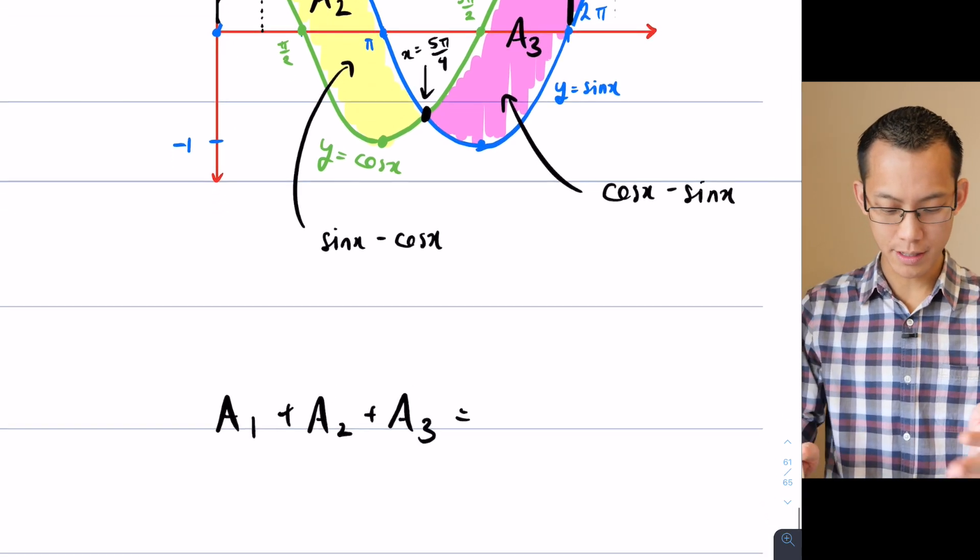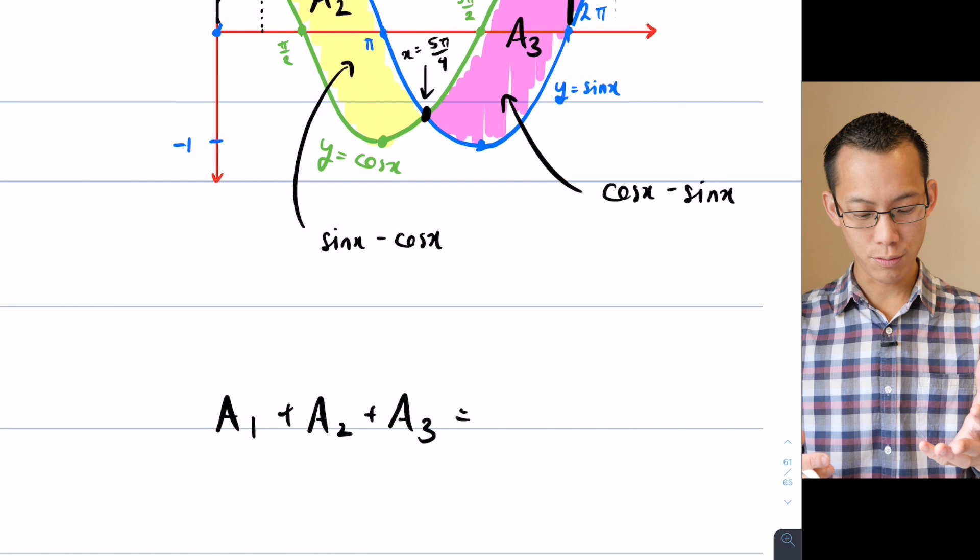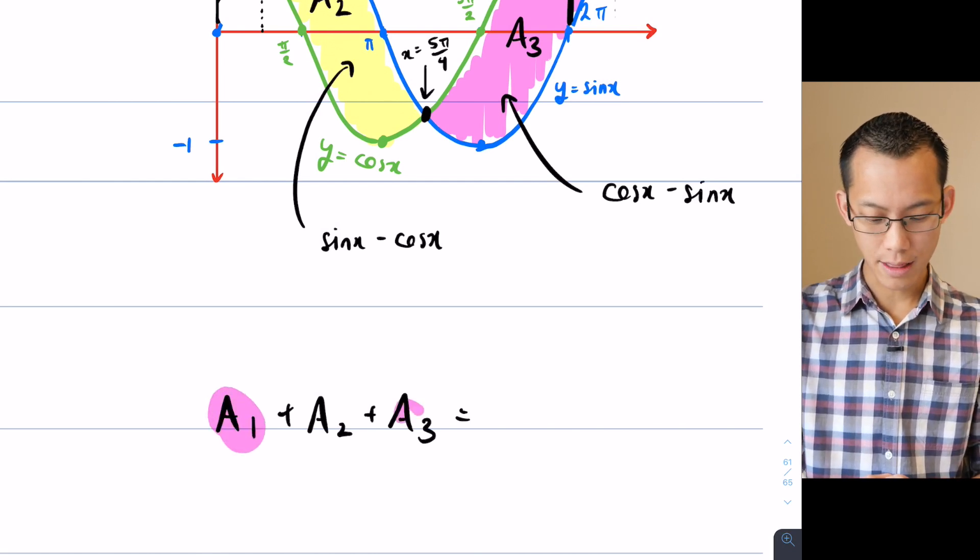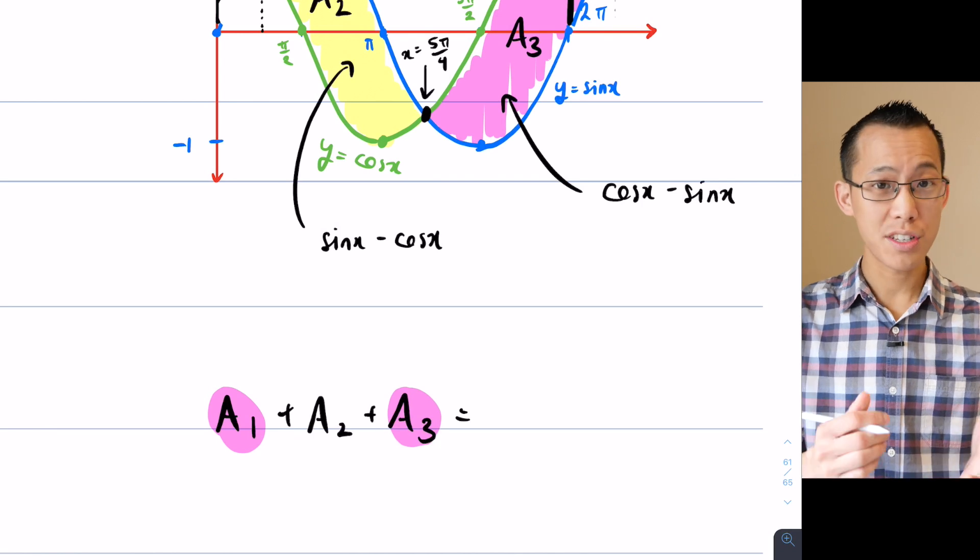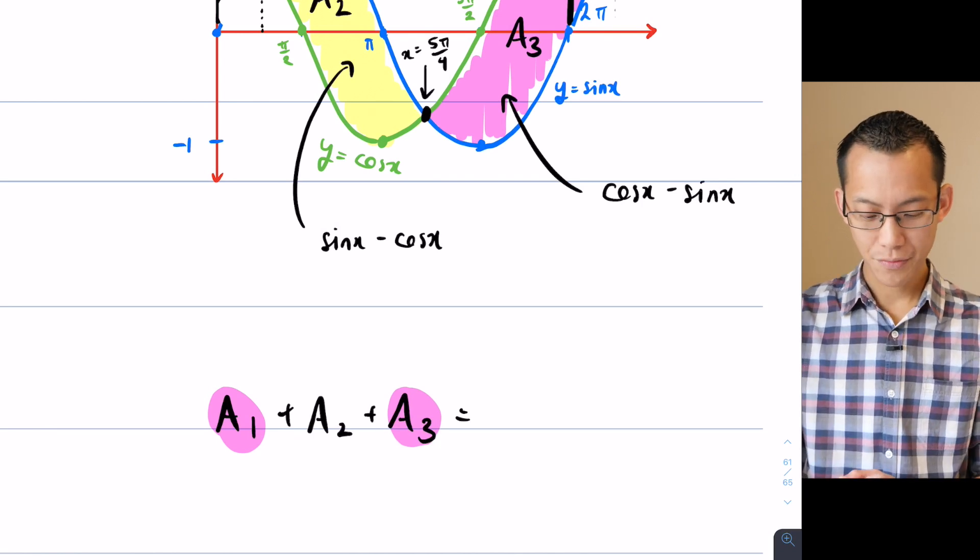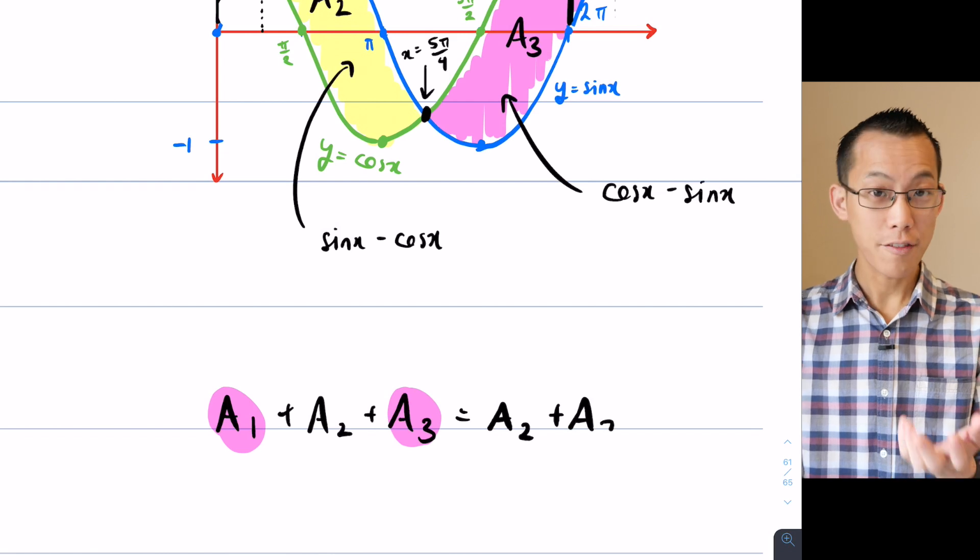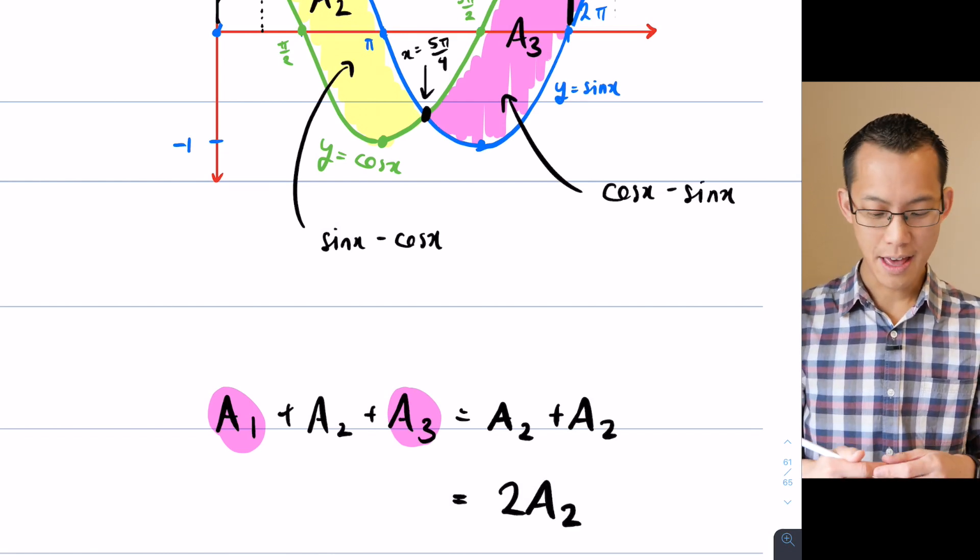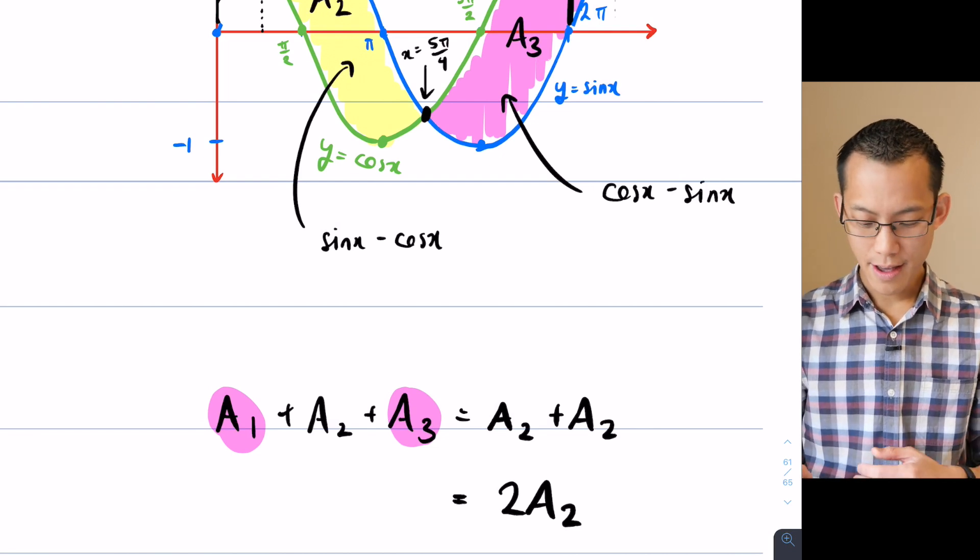If I want A₁ plus A₂ plus A₃, then because A₂ is equal to A₁ and A₃, I'm just going to substitute A₁ and A₃ for another A₂. That will give me my total area, and clearly that's going to be an easier thing to evaluate than all three altogether. I'd rather prefer to evaluate one integral rather than two integrals, because that's just less work for me to do.